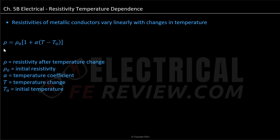Because of this, our formula for resistivity is: rho is equal to rho naught times (1 plus alpha times (T minus T0)), where rho is our resistivity after temperature change, rho naught is our initial resistivity, alpha is equal to our temperature coefficient, T is equal to the temperature, and T0 is equal to our initial temperature.